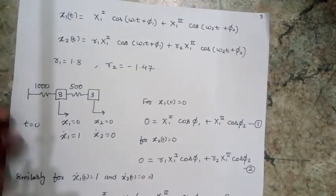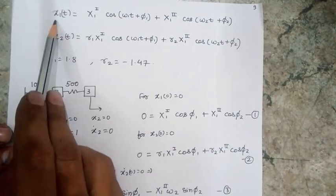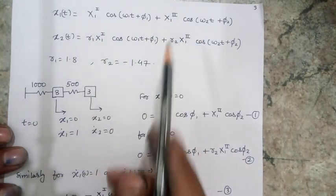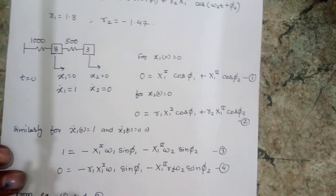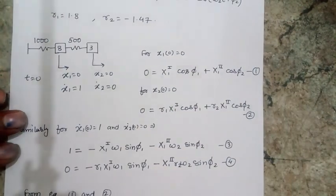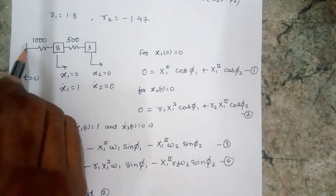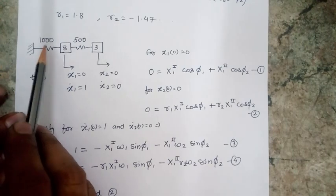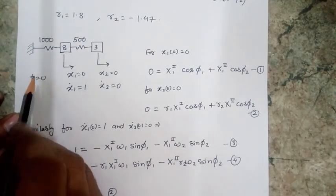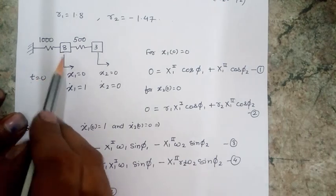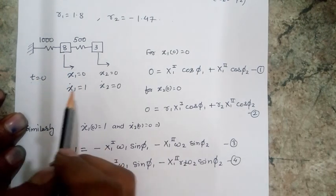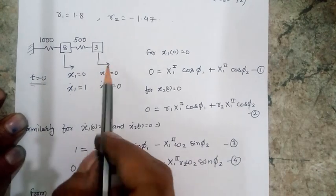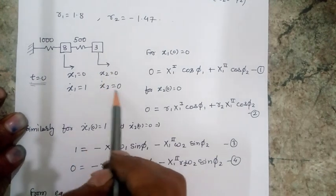After getting these equations for x1 and x2, by putting the r1 and r2 values and solving the four equations using initial conditions, I can get the solution. Here I am considering masses of 8 kg and 3 kg, stiffness values of 1000 N/m and 500 N/m, with the initial condition that the first mass has zero displacement but a velocity of magnitude 1 at t = 0, and for the second mass, no displacement and no velocity.